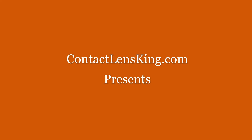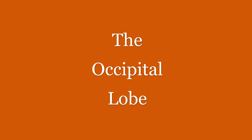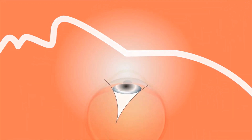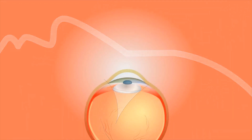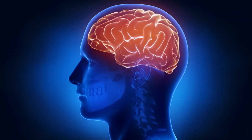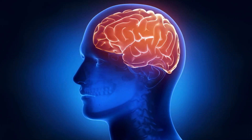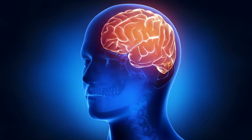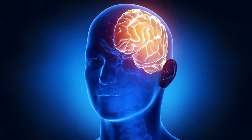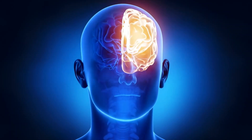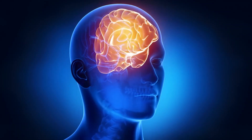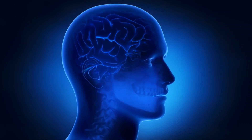ContactLensKing.com presents: What is the occipital lobe? The eye is a very complicated organ, but without the brain to process the information, it does little good. The specific part of the brain that processes visual information is called the occipital lobe.